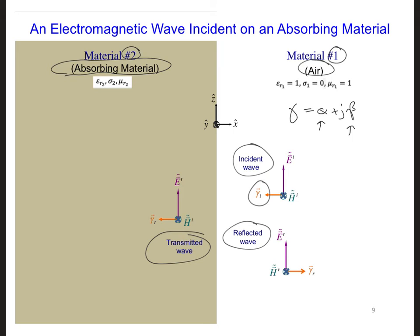The first thing we want is a reflection coefficient of 0 at the interface. Is this possible? The reflection coefficient for the electric field of an electromagnetic wave at the interface between two materials is eta 2, the characteristic impedance of material 2, minus eta 1 over eta 2 plus eta 1.